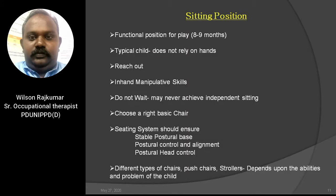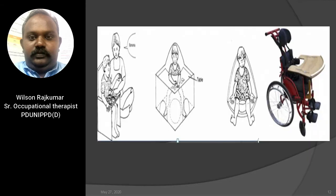The sitting position becomes a truly functional position for play when a child is about 8 to 9 months old, when a typical child has good trunk control, balance in sitting, and hip mobility to reach out for toys. Some CP children never attain independent sitting, so we should not wait. A seating system should ensure a stable postural base with the pelvis as an important factor for postural control and head control. Different types of chairs including push chairs, strollers, wheelchairs, corner chairs, and box chairs can provide proper sitting positions.